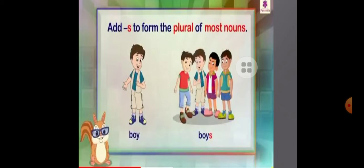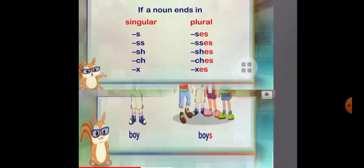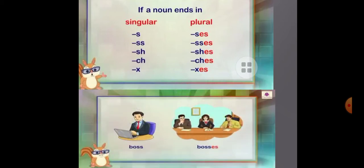The first rule of singular and plural is we have to add -s to form plural nouns, like boy becomes boys. The second rule is: when a noun ends in -s, -ss, -sh, -ch, or -x, we have to add -es to make the plural noun.